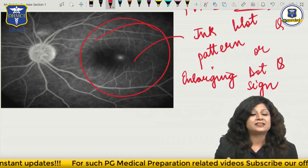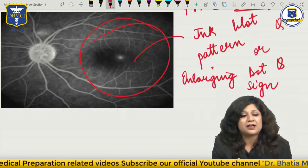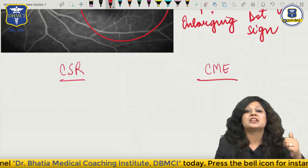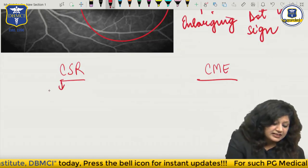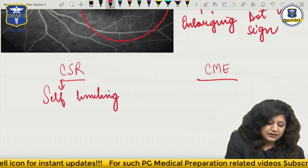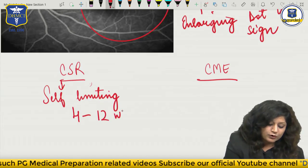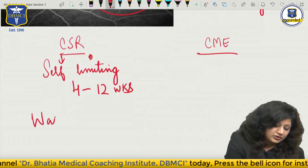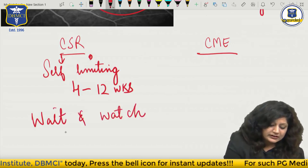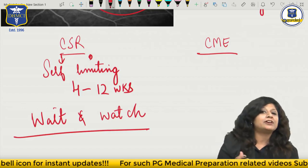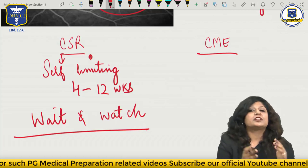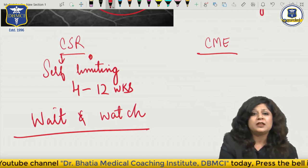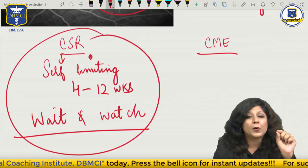Now we have come up to the testing and confirmation of CSR and CME. Quickly let us see the treatment. What is the treatment of CSR? CSR is a self-limiting condition - spontaneous resolution occurs in about 4 to 12 weeks. Therefore, wait and watch is the most important thing we do in these patients. It is also a recurrent disease, so if it is not resolving, or it is bilateral, or it is recurrent, in those cases we can do photocoagulation. But in maximum cases, we are doing just wait and watch.